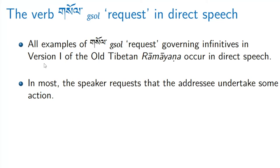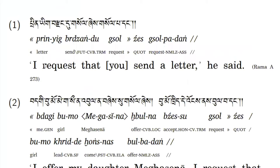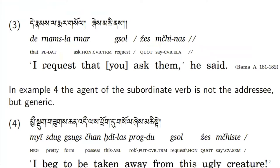Version two is basically a copy of version one with certain editorial changes, so you get more of one état de langue if you're working on version one. The infinitives only occur in direct speech, and in most cases the speaker is requesting something from the addressee — please do some action. So here are just some examples: 'I request that you send a letter, he said.' 'I offer my daughter Megasena; I request that you accept her.' 'I request that you ask them, he said.' These are all requests by the speaker to the addressee.